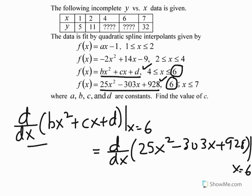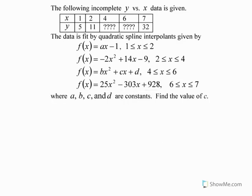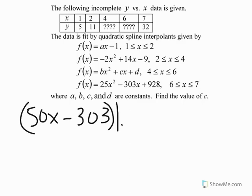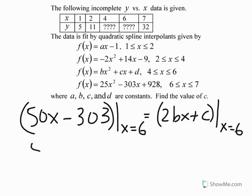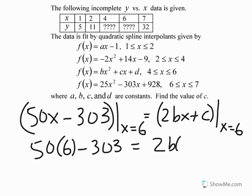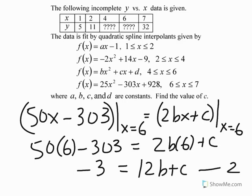Let's go ahead and find out what this is. We're going to find out that 50x minus 303 is the value of the derivative of the fourth spline at x equal to six. And then 2bx plus c is the derivative of the third spline at x equal to six. So what we get is 50 times 6 minus 303 equal to 2b times 6 plus c. And I get minus 3 is equal to 12b plus c. So that gives me the second equation.